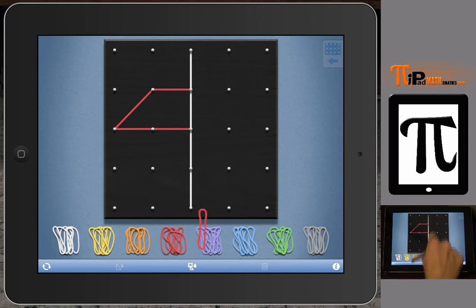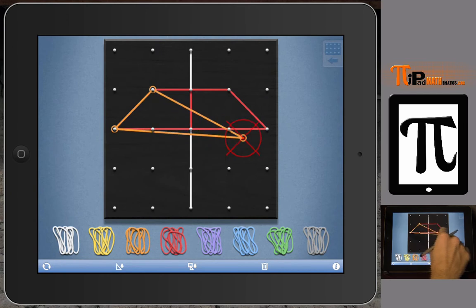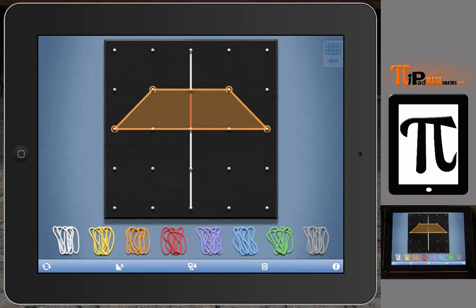We can take our figure here and reflect it about that line, thus creating another figure - a trapezoid - that has a line of symmetry. What you can see in the middle, that white line, is a line of symmetry where the left side reflects about that line to create the right side.